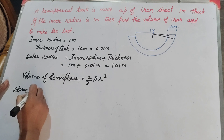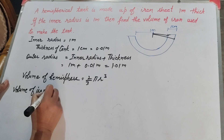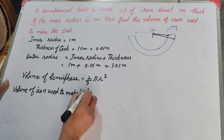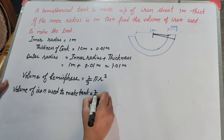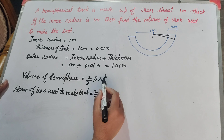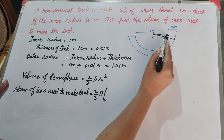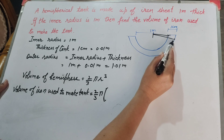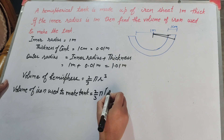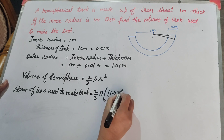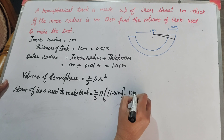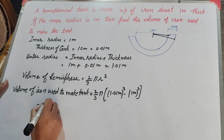Volume of iron used to make the tank equals (2/3)π times outer radius cubed minus inner radius cubed. There are two radii: the outer radius 1.01 meter and the inner radius 1 meter. So we subtract outer radius minus inner radius: (1.01)³ minus (1)³.